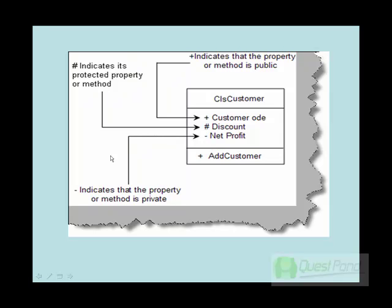To summarize the UML notation: in the first section we define the class name, the second section holds the properties, and the third section holds the method names. A plus notation before a property or method name indicates it is public. So if any client creates an object of clsCustomer, they will be able to call the customer code property or call the addCustomer method.